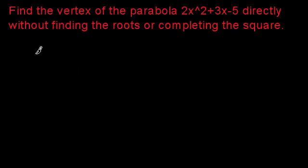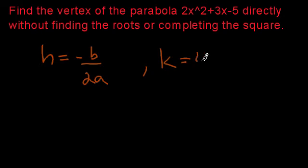Very quickly, in our last tutorial, I showed you that the h value can be found by this formula: h = -b/(2a), and the k value can be found with this formula: